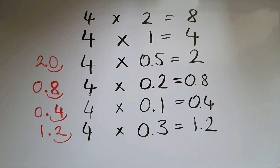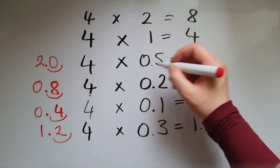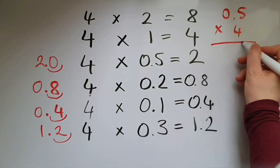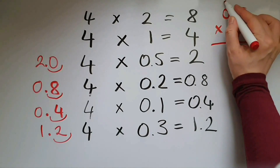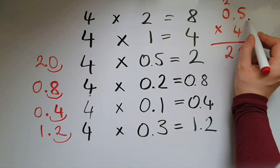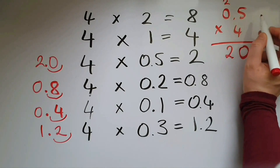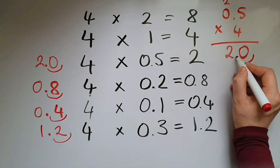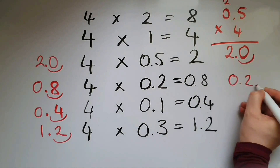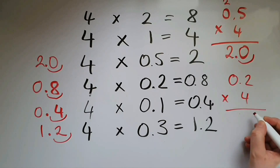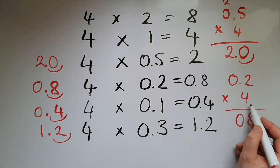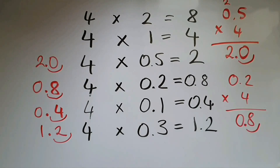This is the short way to do this, but you can also go through the long route. So let's do 0.5 times 4. 4 times 5 is 20, so 0 down and 2 carried over. 4 times 0 is 0, and the 2 makes 2. The first number has one decimal place and the second has none, so we give the answer one decimal place: 2.0, which is the same as 2. Now 0.2 times 4: 4 times 2 is 8, 4 times 0 is 0. One decimal place in the first number, 0 in the second, so one decimal place in the answer: 0.8.